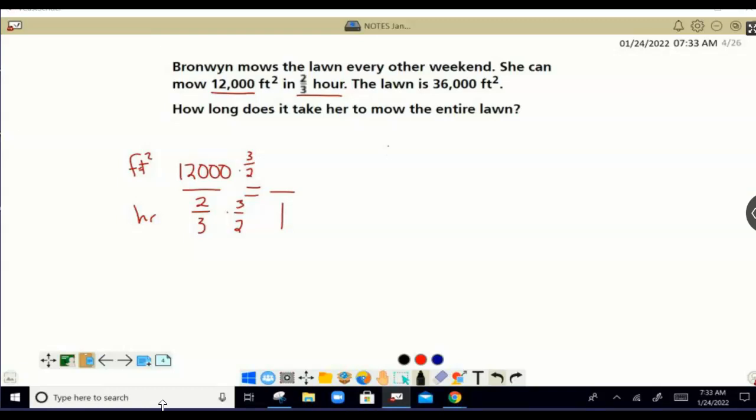We come off to the side. We do our math. We have 12,000 times three halves. This is just our scrap paper over here, which is 36,000. And that's divided by two, which is 18,000. So 18,000 square feet per hour.